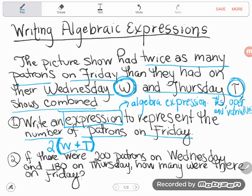Now number two, I can use this expression to figure out some information. It says if there were 200 patrons on Wednesday and 180 on Thursday, how many were there on Friday? I'd already told you how to find Friday - that's what this expression was about. It says if you want to know how many patrons there were on Friday, combine Wednesday and Thursday's numbers and multiply by two. What I'm going to do is substitute these numbers into my expression. Let me write down my expression one more time: 2 times W plus T.